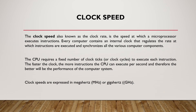The clock speed, also known as the clock rate, is the speed at which a microprocessor executes instructions. Every computer contains an internal clock that regulates the rate at which instructions are executed and synchronizes all the various computer components. The CPU requires a fixed number of clock ticks, that is clock cycles, to execute each instruction. The faster the clock, the more instructions the CPU can execute per second, and therefore the better the performance of the computer system. Clock speeds are expressed in megahertz or gigahertz.